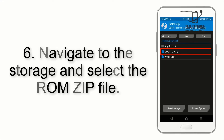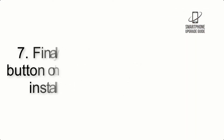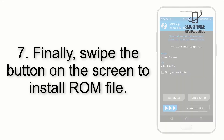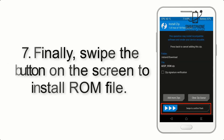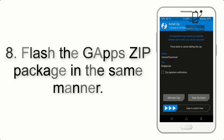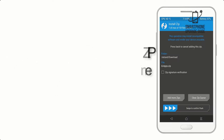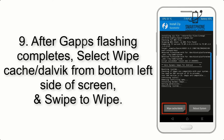Step 5: Go back to the recovery main screen and tap on the Install button. Step 6: Navigate to the storage and select the ROM zip file. Step 7: Finally, swipe the button on the screen to install the ROM file.